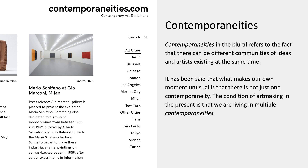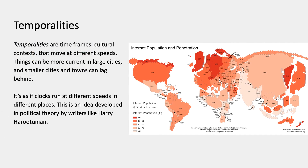The plural contemporaneities is useful also because it's possible that our time might be unusual in the history of art in that there's not just one contemporaneity but plural contemporaneities. The condition of art making in the present is that we're living with multiple contemporaneities, as any art school shows — many different strands that can be assigned to different historical periods and frames of reference all running at the same time. Temporalities are time frames, cultural contexts that move at different speeds, so things can be more current in large cities while smaller cities and towns can lag behind.